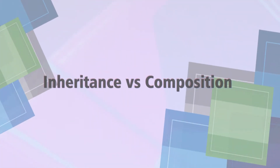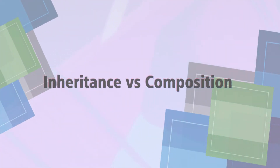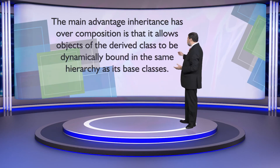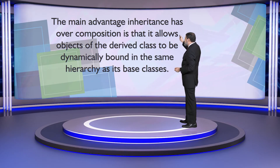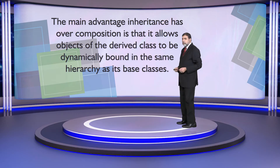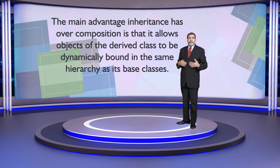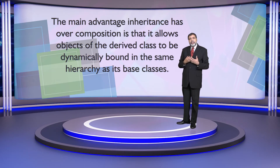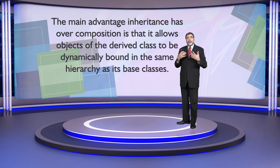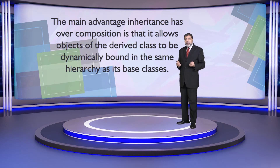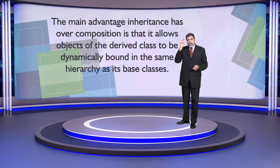The difference in inheritance or composition is obviously in syntax and the way it is used. The main advantage of inheritance over composition is that it allows objects of the derived class to be dynamically bound in the same hierarchy as its base class. This gives us polymorphic behavior and dynamic binding.